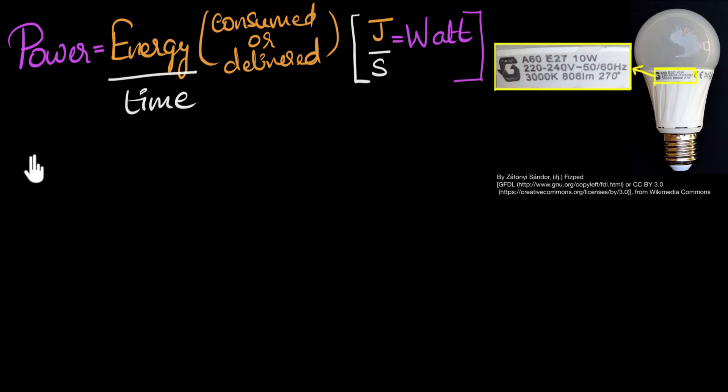So over here, 10 watt means 10 joules per second. This means that this bulb consumes 10 joules of electrical energy every second. And when I say consume, what I really mean is that it converts electrical energy into some other form. In this example, it could be heat and light.